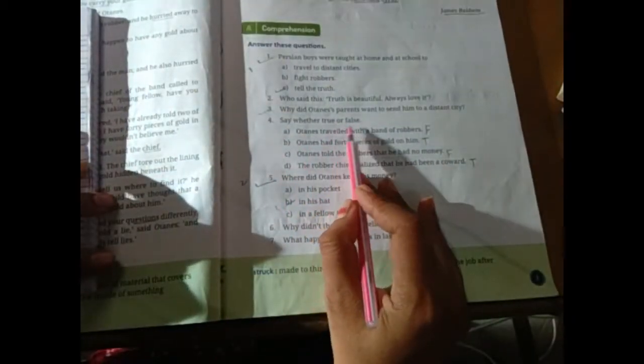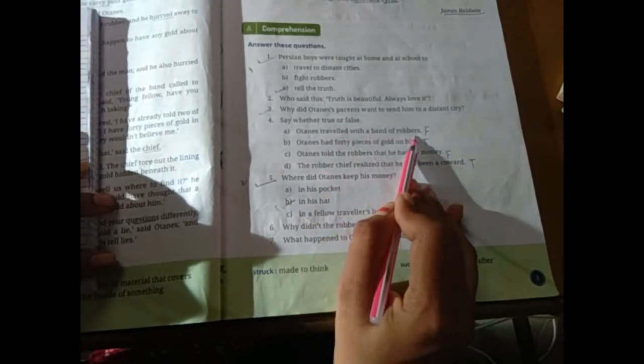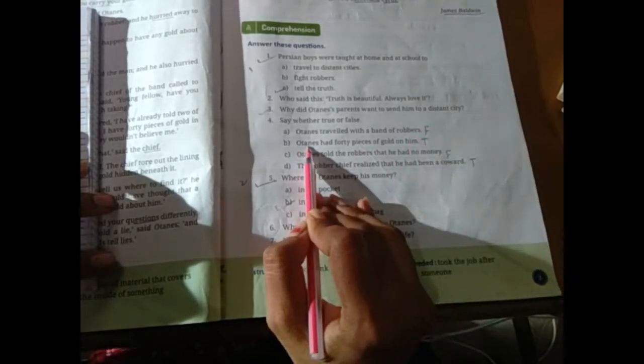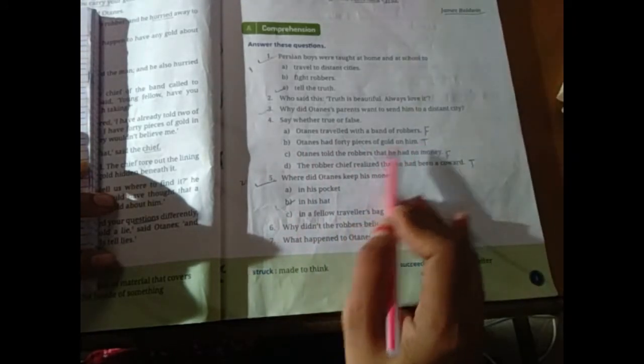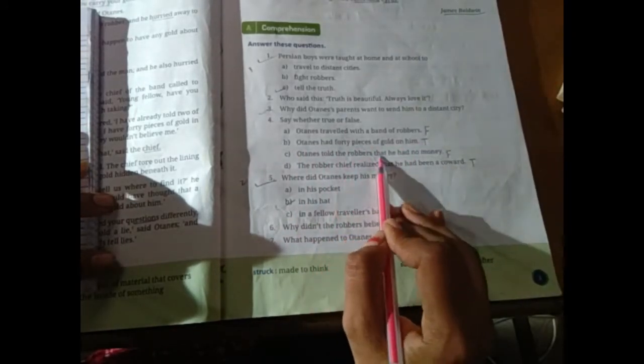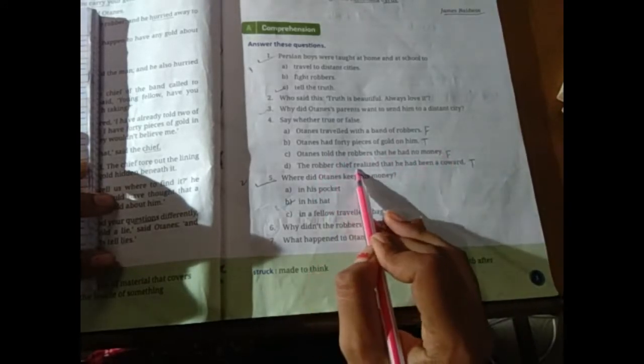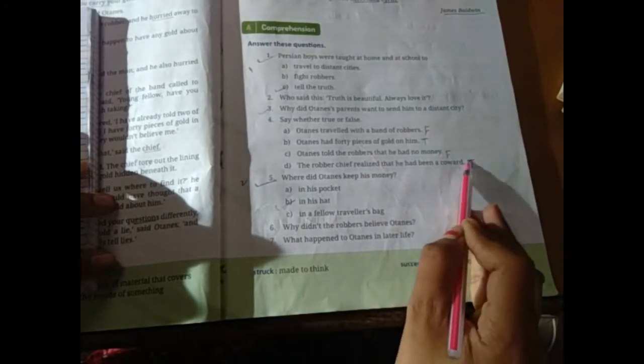True or false hai? Say where the true or false? First, Hortense traveled with a band of robbers. In this case, robbers ke saath nahi gaya the travel, no. Second, Hortense had 40 pieces of gold on him. Yes, true. Hortense told the robbers that he had no money. False. The robber's chief realized that he had been a coward. True.